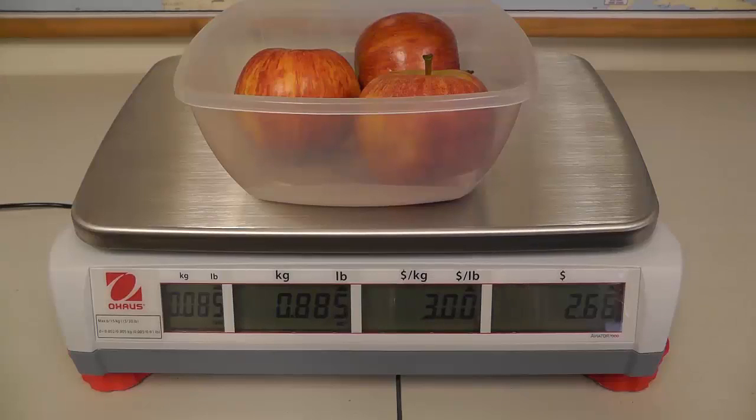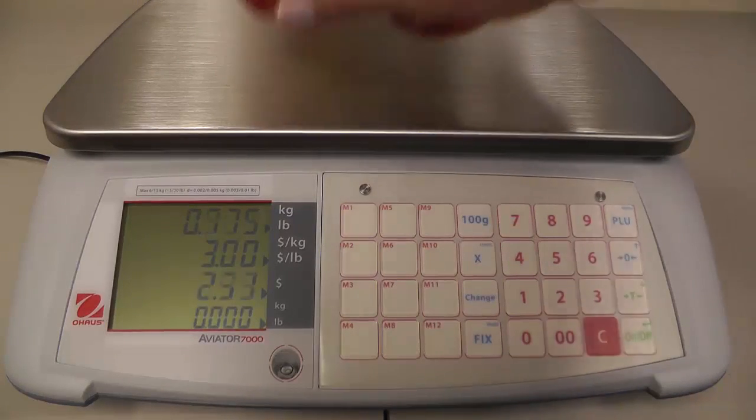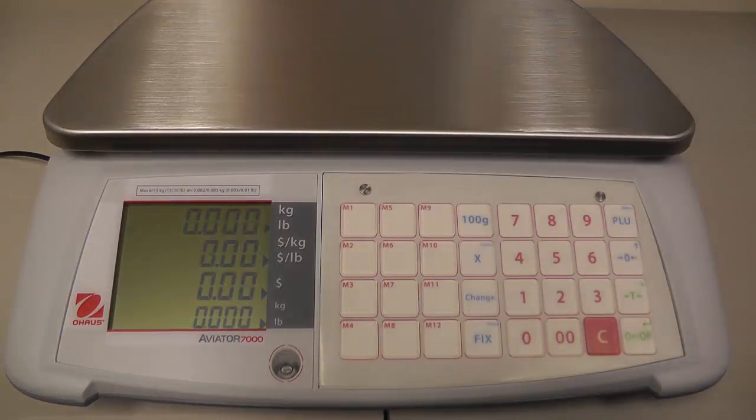That's the basic operation of the scale. We take the items off and you can see everything cleared out of the display. That's the normal way that you would use the scale, and you could use it this way for virtually all your transactions.